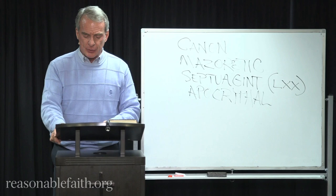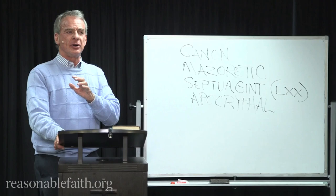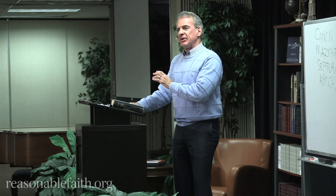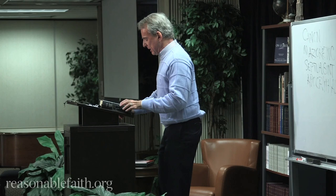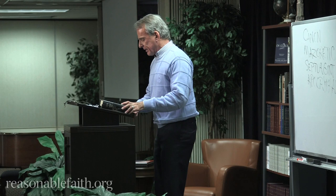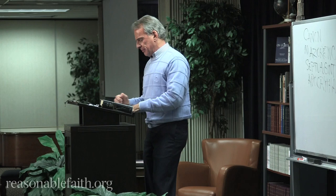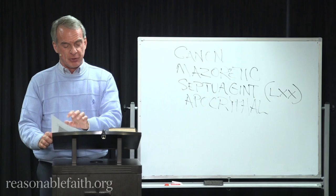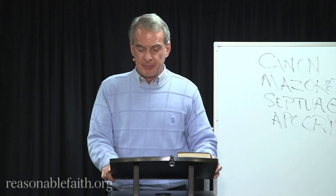These are not the same thing as the apocryphal books of the New Testament. New Testament apocrypha refers to books written hundreds of years later than the time of Jesus and not recognized by any Christian confession as belonging to the canon. But Catholic and Orthodox churches do recognize additional books found in the Septuagint as part of the Old Testament canon. These apocryphal books include Tobit, Judith, certain additions to Esther and Daniel, the Wisdom of Solomon, and 1 and 2 Maccabees, among others.